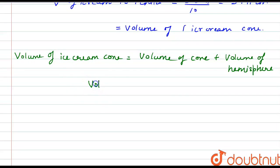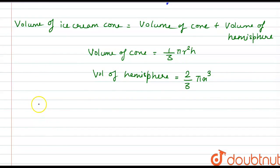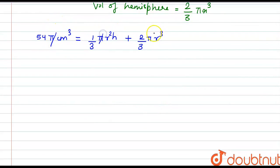We know that the volume of cone is 1 by 3 pi r squared h. So let us now put the volume of ice cream cone is 54 pi cm cubed is equal to 1 by 3 pi r squared h plus 2 by 3 pi r cubed. We can cancel out pi from both the sides and put the value of h as 4r. That is given in the question that h is equal to 4 times r. So if we put the value we have 54 is equal to 1 by 3 into r squared into 4r plus 2 by 3 into r cubed.